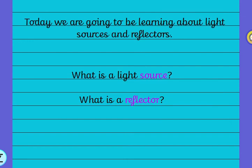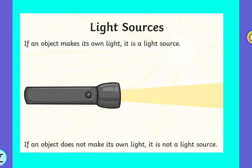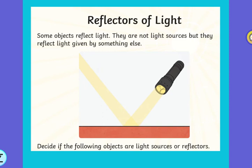Let's recap again: what is a light source and what is a reflector? A light source is an object that makes its own light — my example on the slide is a torch, but there are lots of other light sources that make their own light. A reflector of light is an object that is not a light source, but it can reflect light given by something else. For example, the classic one is a mirror, but anything with a shiny surface is a reflector of light.